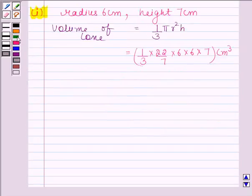Now this is equal to, canceling 7 from both numerator and denominator, on cancelling 6 by 3 we get 2, and on simplifying this we will get 264 cm³. So volume of cone is 264 cm³. This completes the first part.